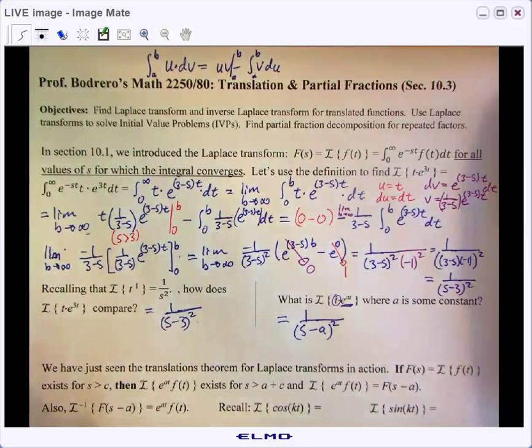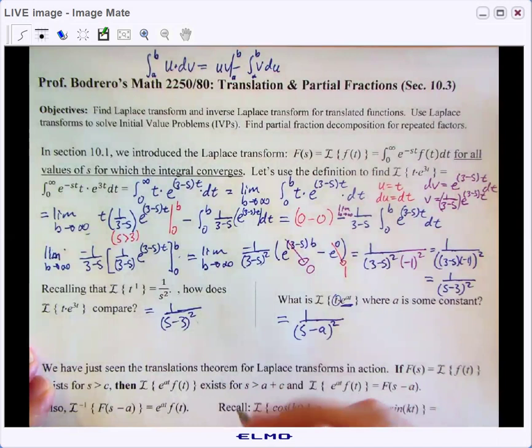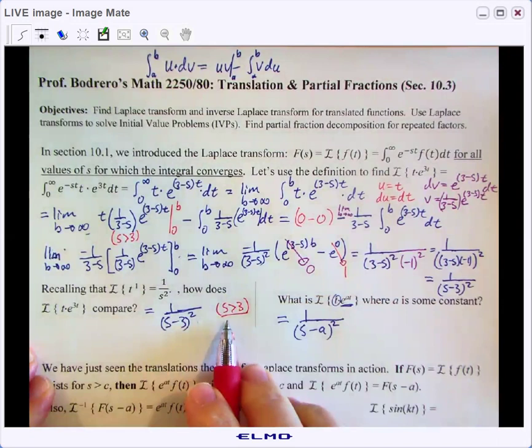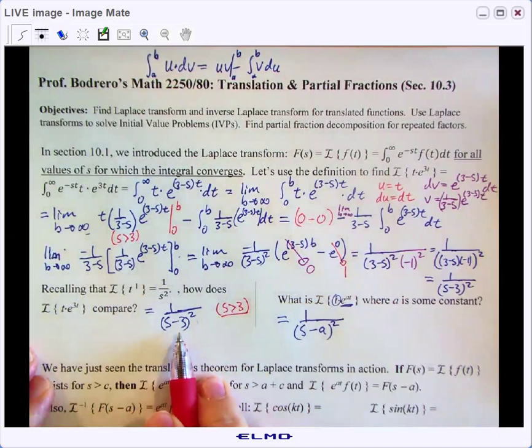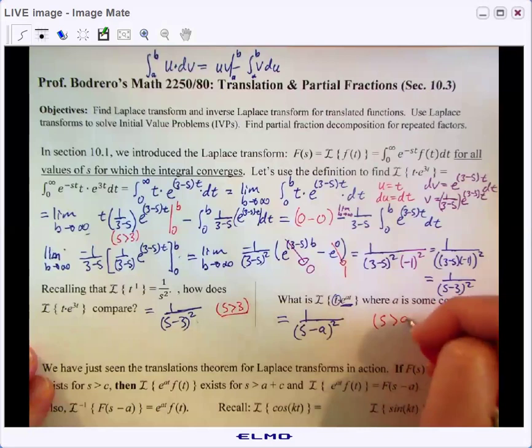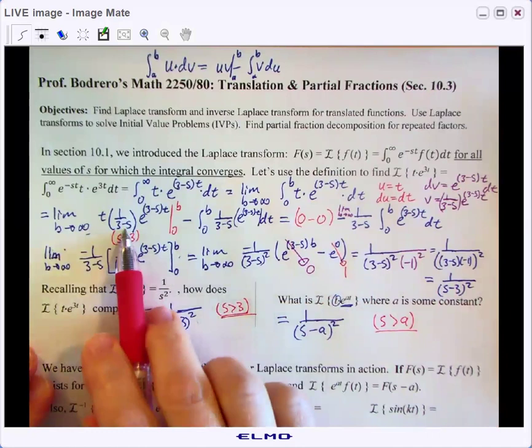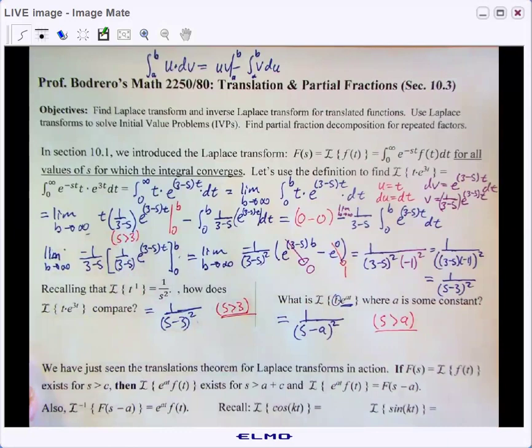Okay, and we're back for part two here. So we found out that we did have a translation. One thing that I need to do before we move on is mention, and sometimes we'll put this in a parenthetical mark here, for this integral to converge we need s to be greater than three. So this Laplace transform only applies if s is greater than three, and similarly this Laplace transform will apply if s is greater than a. These are not multiplied, these are just parenthetical reminders that for this to work on our improper integral and for it to converge, we need this condition to be true.